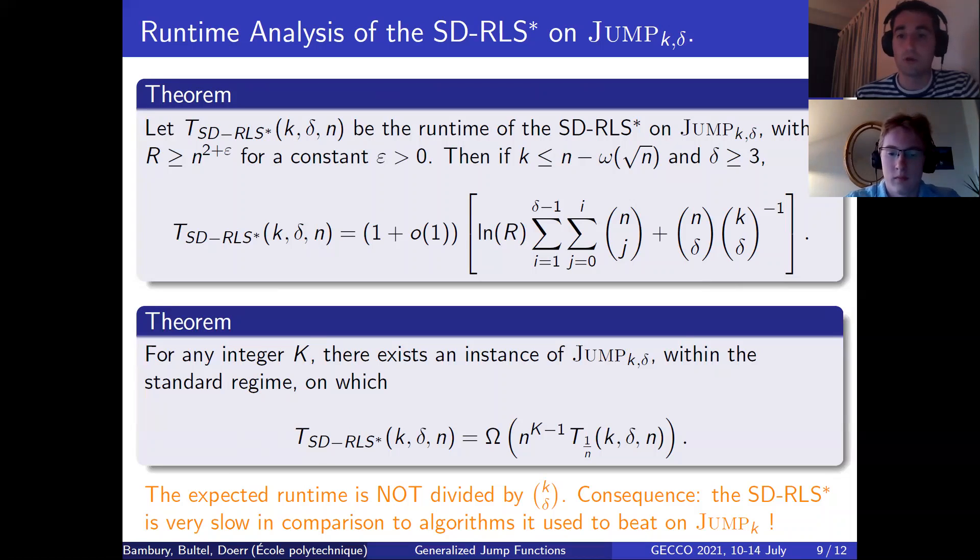However, surprisingly and spectacularly, this does not generalize at all on Jump_{k,δ}. We were able to find using standard analysis techniques under mildly restrictive conditions on k and delta, a precise asymptotic runtime for SD-RLS* on our new benchmark Jump_{k,δ}. The formula may not be very enlightening either, but you can feel that this will be much, much larger than what we used to see with Henry. And indeed, we're able to show that within the standard regime, you can find a lot of instances of the Jump_{k,δ} problem, such that the expected runtime of SD-RLS* is bigger than the expected runtime of the basic (1+1) EA, that is to say not even the optimal one, the basic one, by a factor that is polynomial of any degree. So it's absolutely amazing because SD-RLS*, which was the best algorithm on Jump_k by a decent margin, has a runtime not divided by k choose delta on Jump_{k,δ}. And as a consequence, it becomes very, very slow in comparison to other algorithms. So the supremacy is shuffled in some way, which we believe is absolutely interesting.